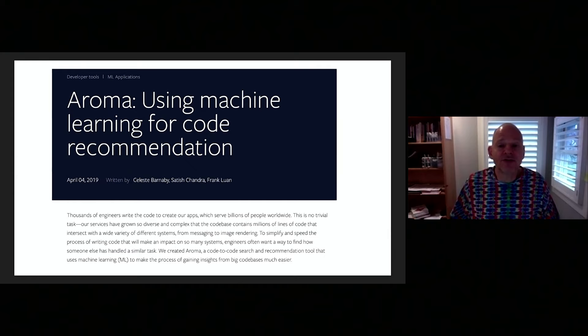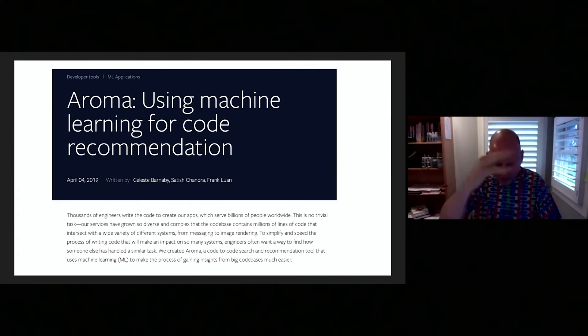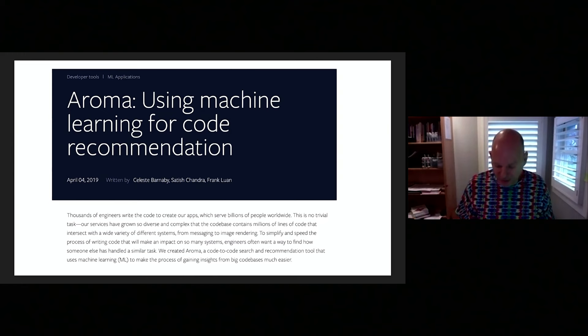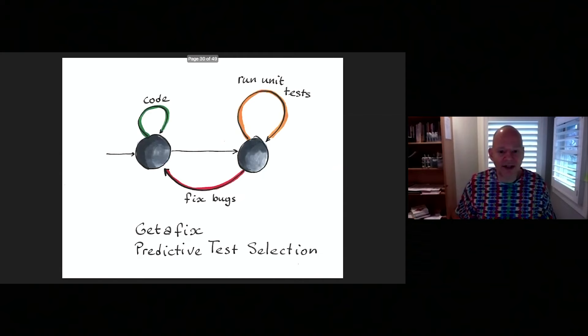Another thing we did is search code using code snippets — Aroma. Maybe you're using a new API and don't quite know how to use it, so you write a little snippet, and you get a recommendation: to use this API, you have to use try-catch around it. This allows people to get code recommendations based on code snippets. We also did a lot of work on code predictions and autocomplete, though we don't have time to cover all of these in detail.